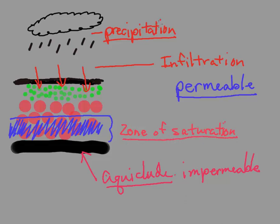So we have precipitation, infiltration going through permeable rock, and it's stopped by the aquaclude. The area where we have all this groundwater, this is the groundwater.